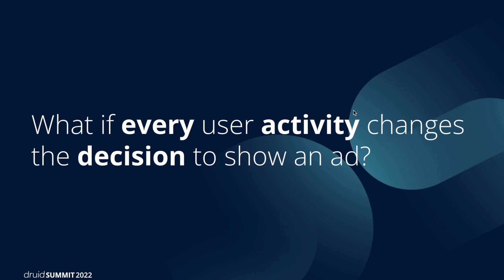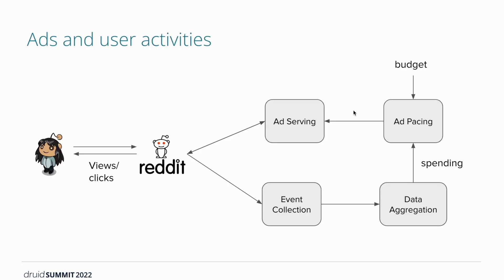What if every user activity changes the decision to show an ad? Let's unpack this into two components: user activity and the decision-making process. A user comes to a Reddit page and we want to show an ad. Reddit makes a request to the ad serving system and it's responded with an ad unit, which can be shown to the user. The user can then choose to view or click the ad, and these are called user activity.